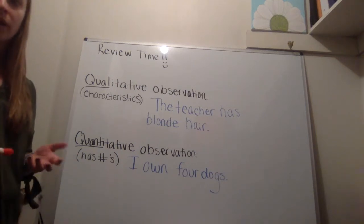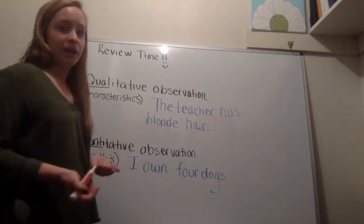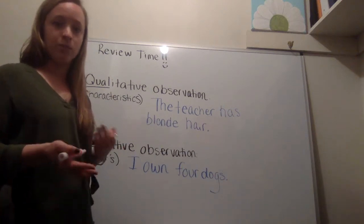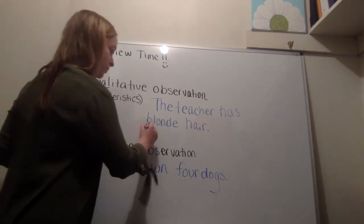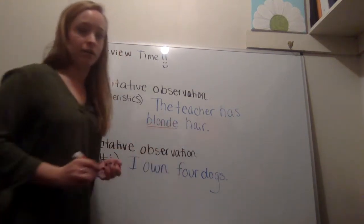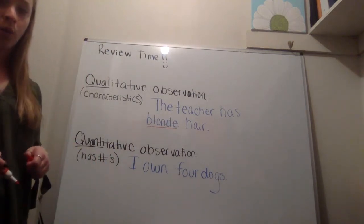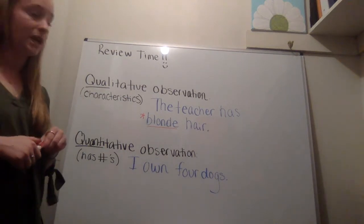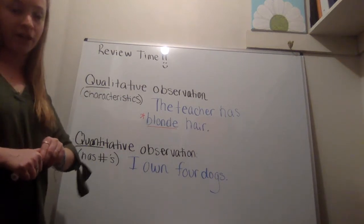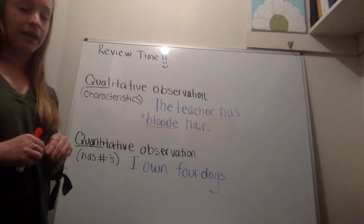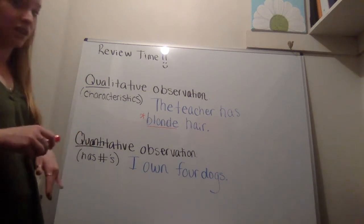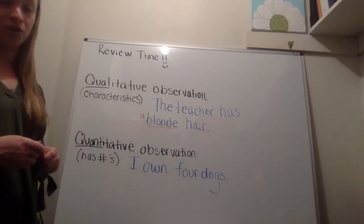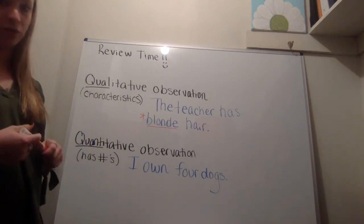So the quality in this, the teacher has blonde hair. Well, what's the characteristic? What am I describing about the teacher? Her blonde hair. So that would be the quality. This is the characteristic here. So if you can't find a characteristic, it's probably not a qualitative observation. So you have to be really specific in the descriptions that you guys are going to give. I'm going to have you guys do a couple on your own for this week's discussion post.